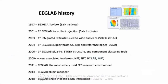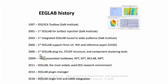EEG Lab really started in 1997. The first version released to the public was the 2003 version. We obtained NIH support, then developed multi-subject analysis in 2006. In 2009, we started to have new associated toolboxes, some of which I'm going to talk about here. And in 2011, EEG Lab was the most widely used EEG research environment. In 2014, we got the plugin manager, and now we're working on integration with LIMO.